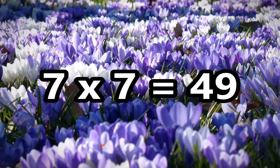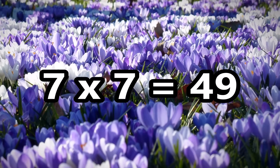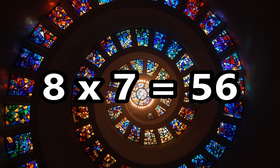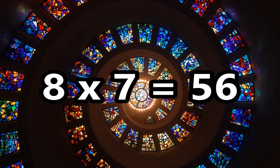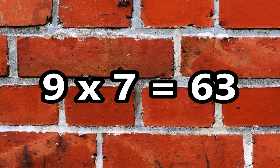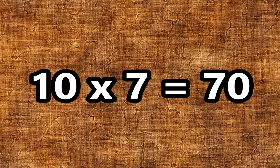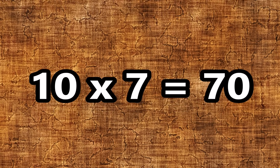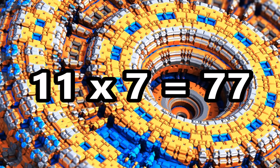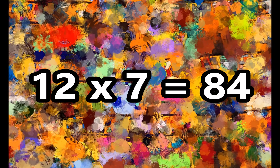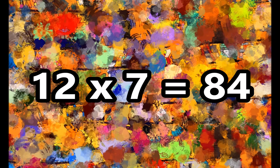6 times 7 is 42. 7 times 7 is 49. 8 times 7 is 56. 9 times 7 is 63. And 10 times 7 is 70. 11 times 7 is 77. And 12 times 7 is 84.